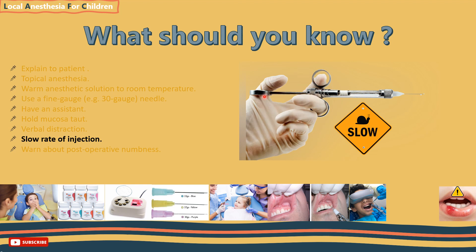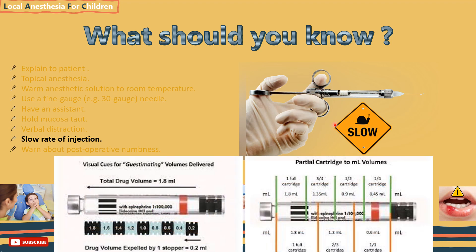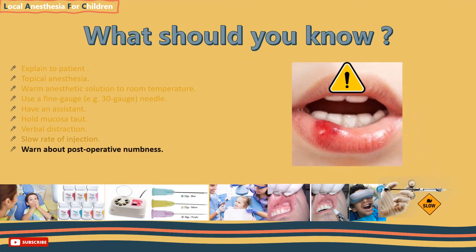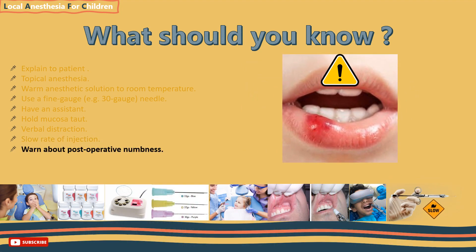This causes damage to the tissues and pain to the patient, and is why patients will have more post-operative discomfort at the injection site. It is also important to watch for any early signs of toxicity as you inject — the easiest way to prevent that is to inject slowly. Number nine: warn about post-operative numbness and instruct the children and their accompanying adults to avoid self-inflicted trauma such as lip and tongue biting, chewing, or sucking.